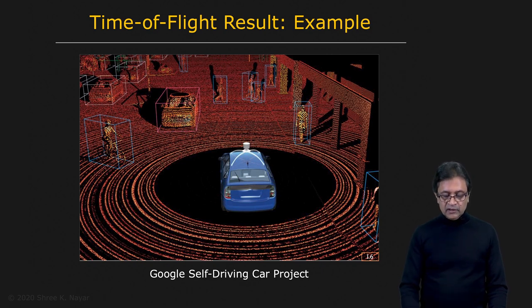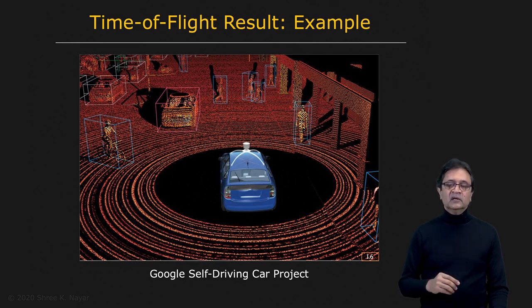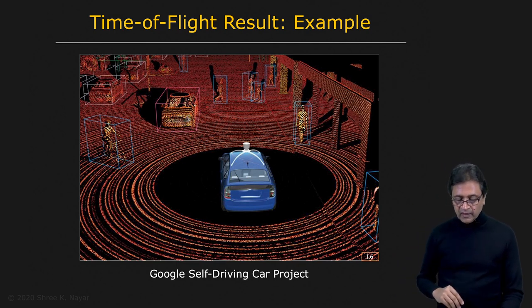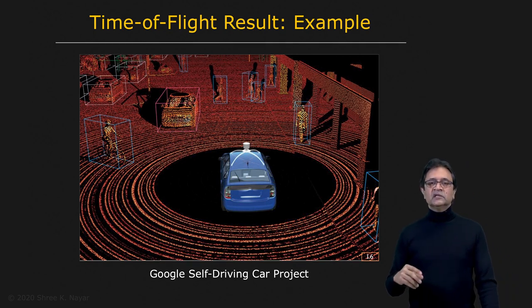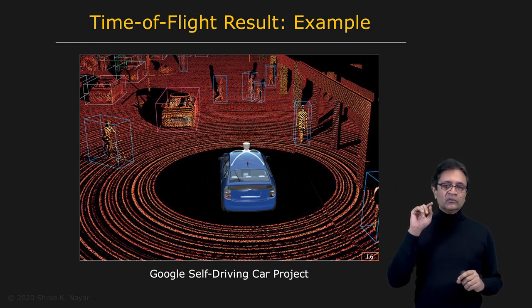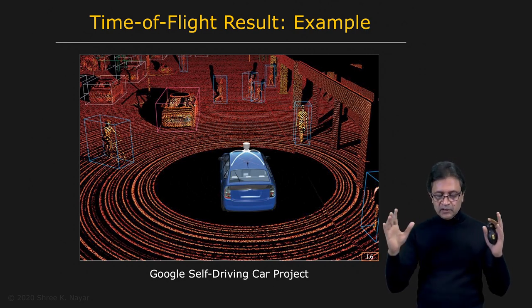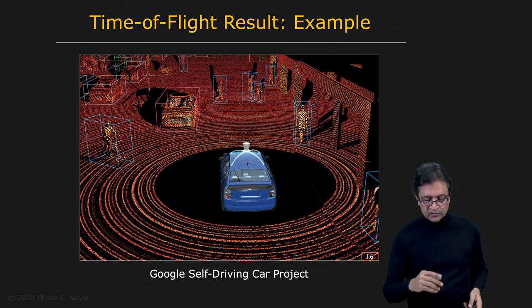High enough accuracy that you can then from the depth map figure out what is a car, what is a pedestrian, and so on. In the case of driverless cars, it turns out that these time of flight systems are not measuring all the pixels simultaneously. They're actually doing it either one or a few pixels at a time and then scanning the sensor around to get a complete 360 degree depth map, as shown here.